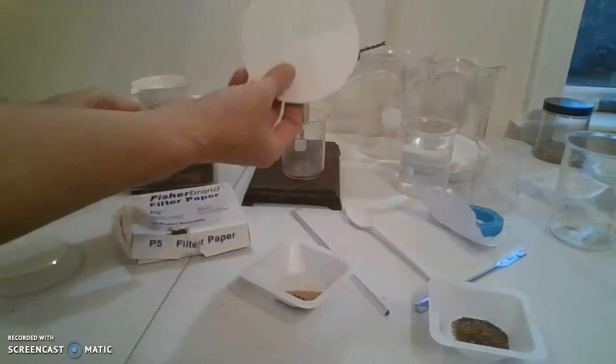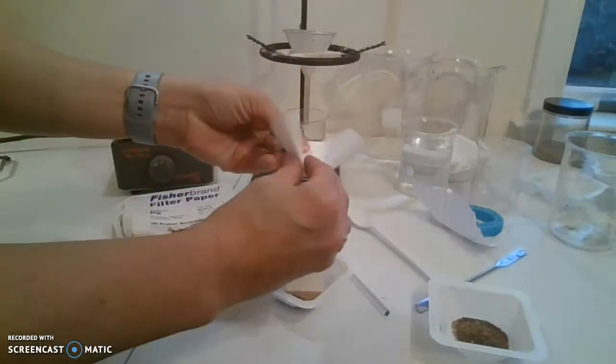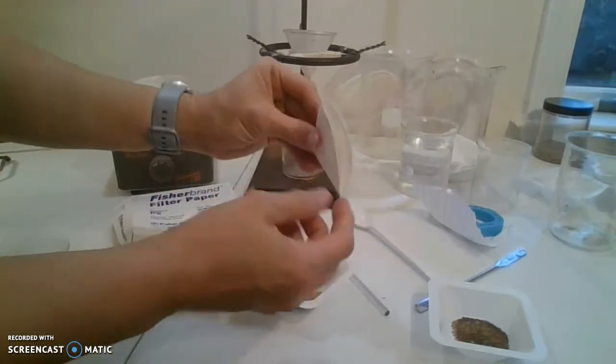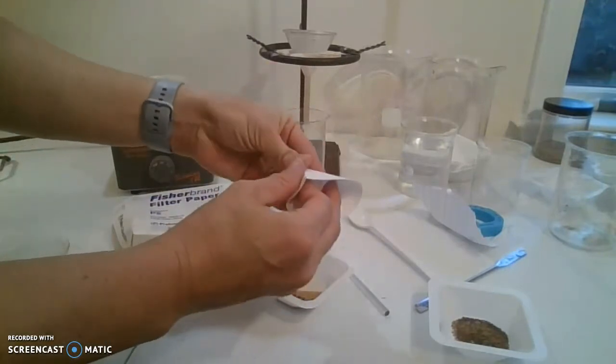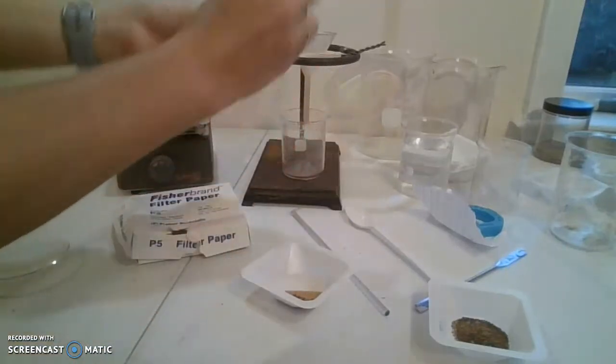the funnel. I'm going to take some filter paper and fold it in half twice so I get a little quarter, and then you separate it into three and one side so it makes a paper cup that goes directly in your funnel.